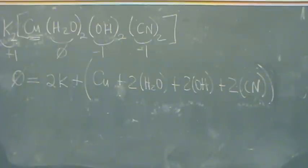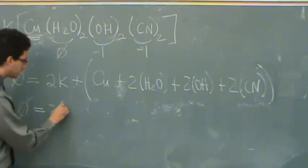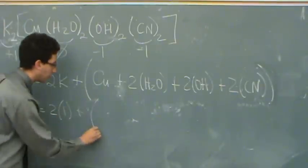Okay, so that's my equation. Now let's plug in all the numbers, because we know everything but copper. Zero equals two plus ones, so two times one, plus open parentheses.